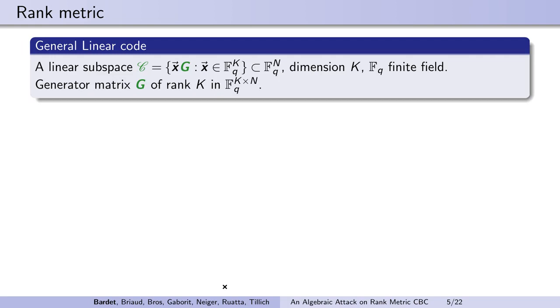We will now go into details, starting with some definitions. A linear code is just a vector subspace of a finite vector space, usually over a finite field. We denote by G a generator matrix, whose rows form a basis of this vector subspace. Every element in the code is a linear combination of the rows of G and is called a codeword.